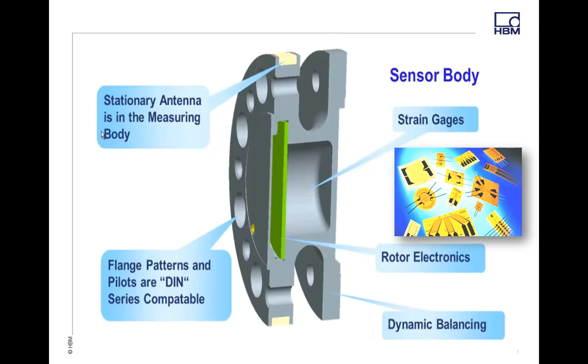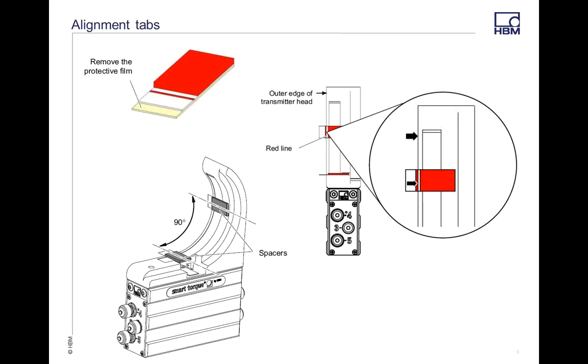So let's talk about alignment. When you first get your transducer, a lot of times there's a little stack of little red rubber spacers that a lot of people think are packaging. Well, that's not really the case. Those are actually alignment tabs to set up your rotor and your stator when you first get your transducer.